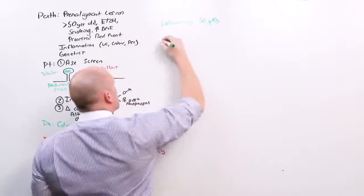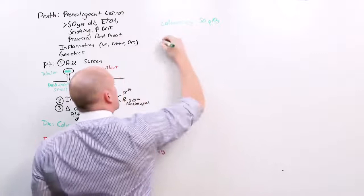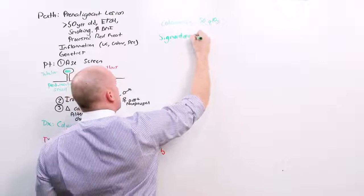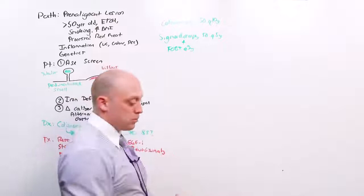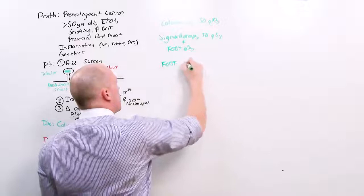Another tool you can use is the FlexSig, the sigmoidoscopy. This is done at age 50, then every 5 years. But it must be done in conjunction with fecal occult blood testing every 3 years. This is USPTF. Or you can do fecal occult blood testing every 1 year. All 3 of these are legitimate options right now.